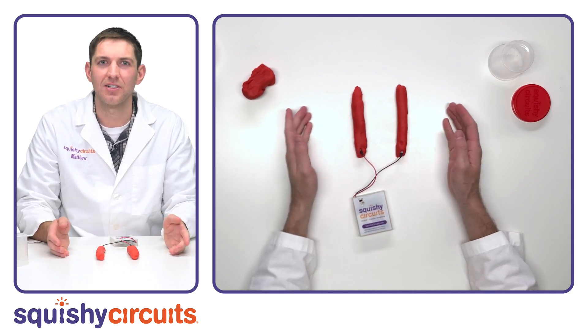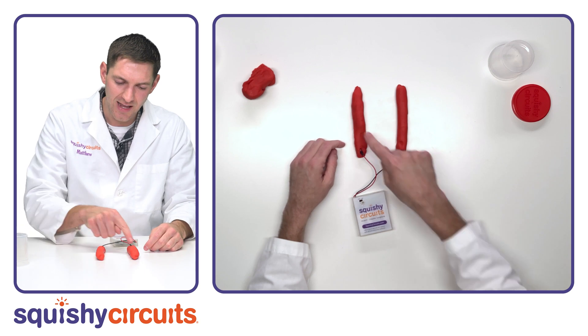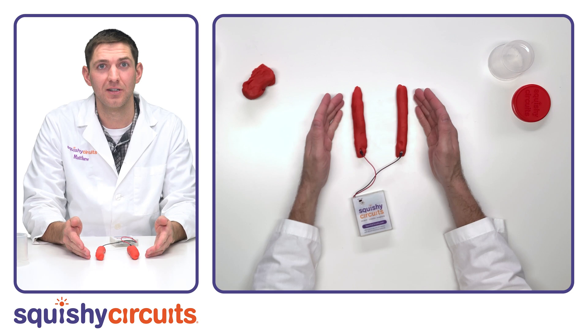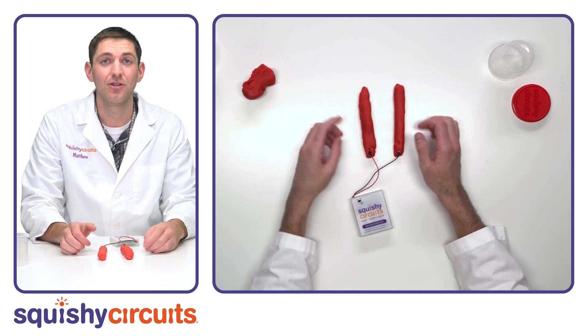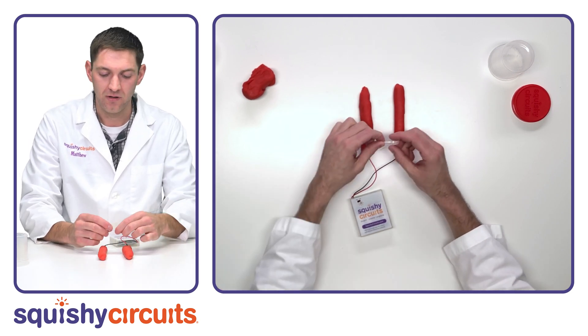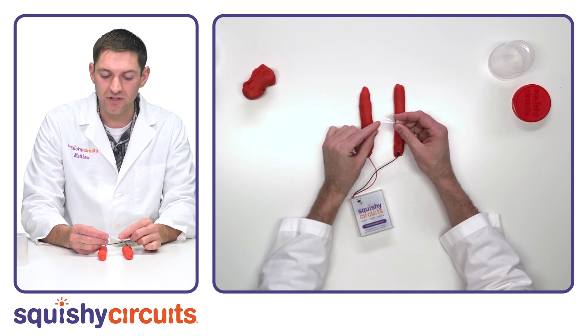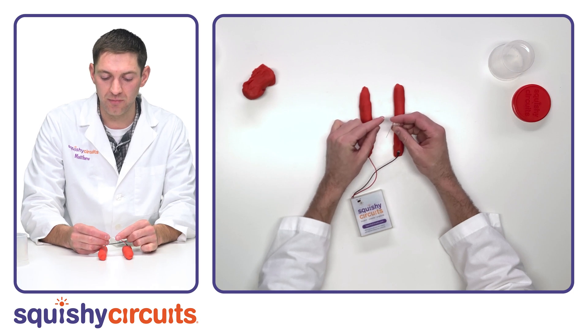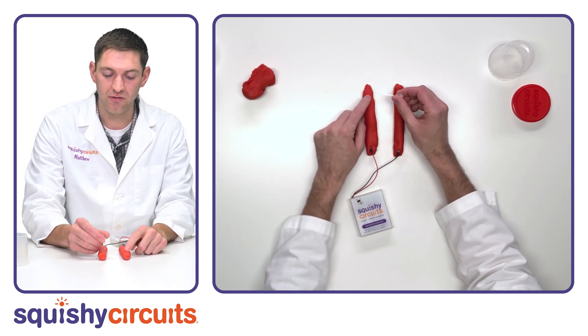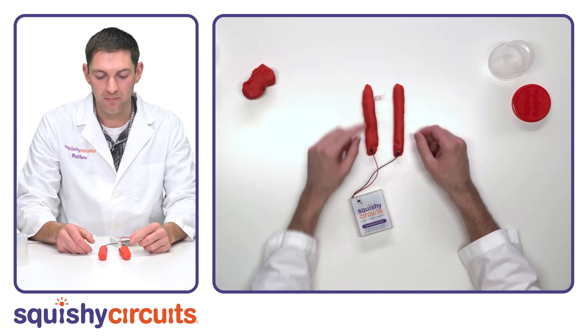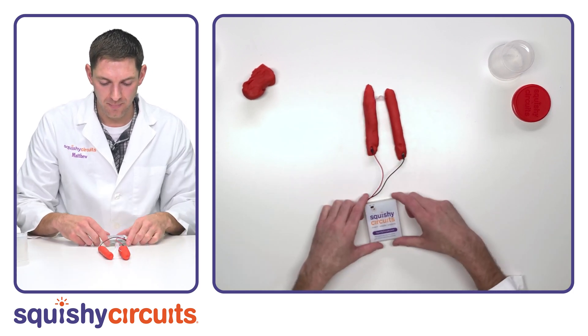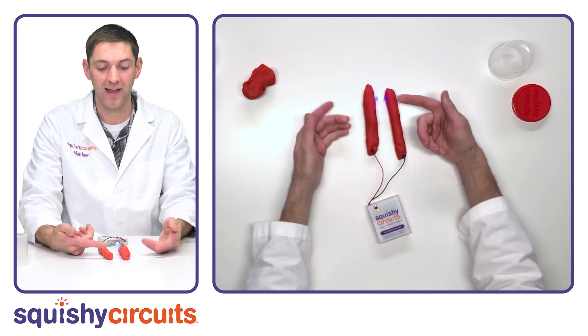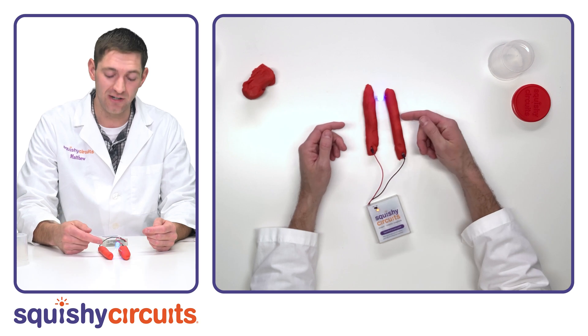Electricity flows in a circuit, which is like a circle. Right now, electricity can't flow through our circuit because we have a gap, or a hole. We call this an open circuit. To close our circuit and to complete the path, we can use our LED. You'll notice that one of the terminals is longer than the other on the LED. Separate the two terminals, and the longer terminal has to go into the play-doh with the red battery holder wire. Now, when we turn on the battery holder, the LED lights up because we've completed our circuit.